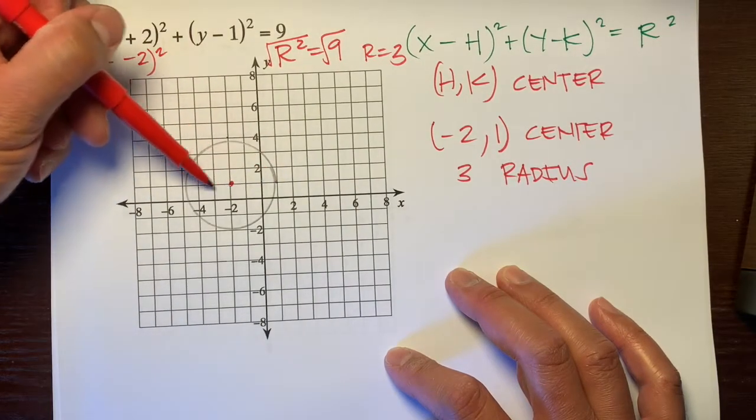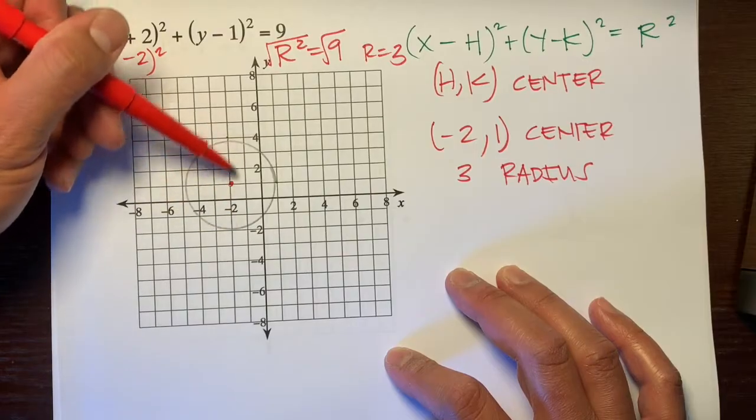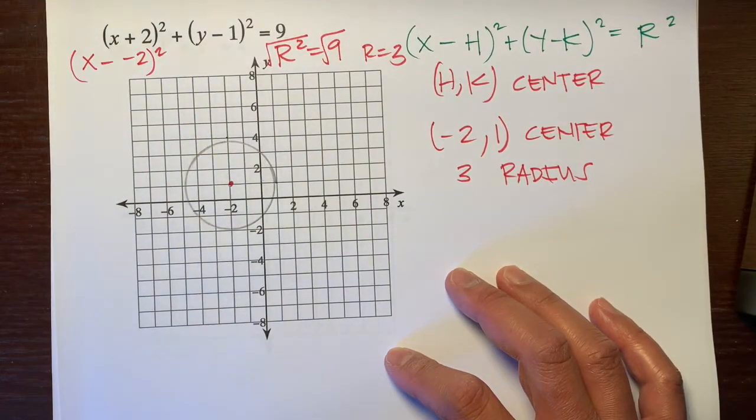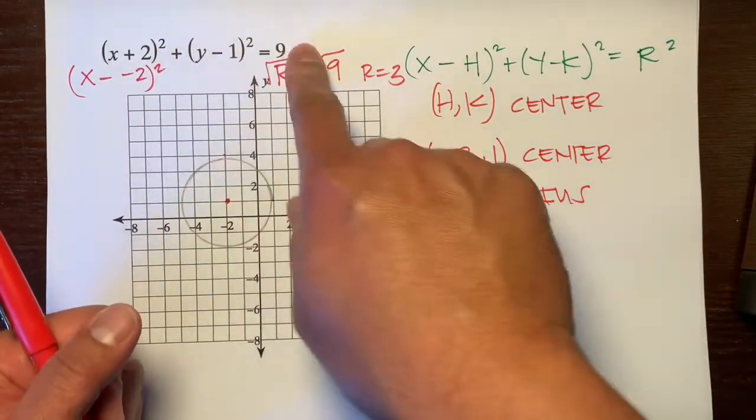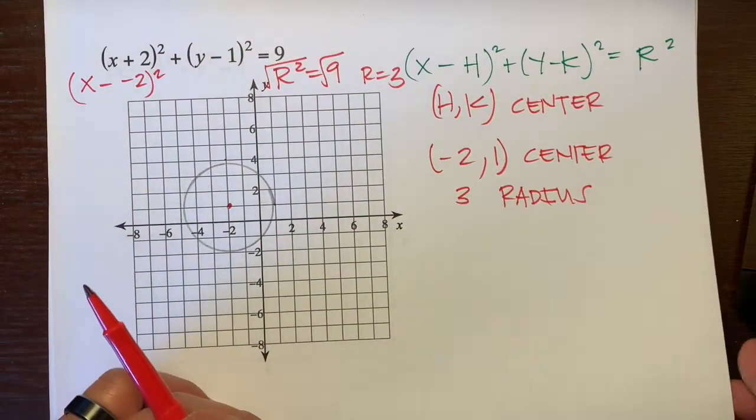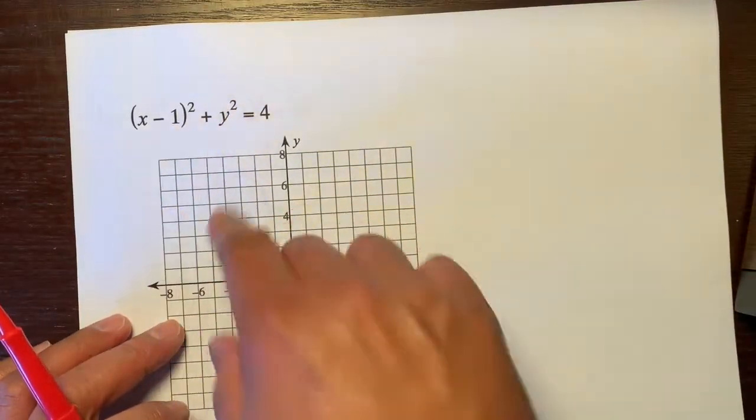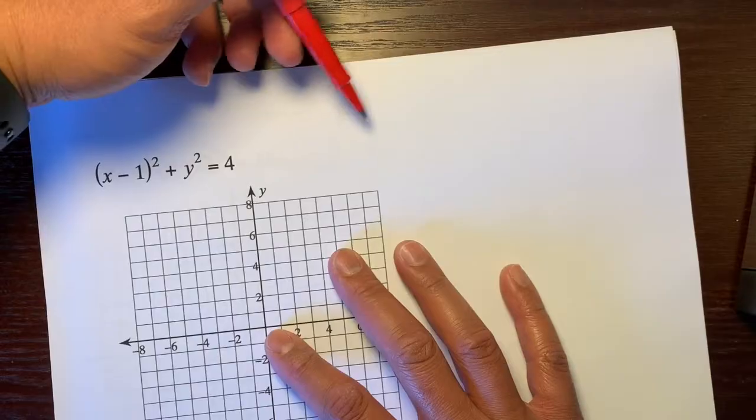This is 3 units away from the center. 3 units, 3 units, 3 units. And if we kept on going, all these radii would be 3 units away. That's how you graph this equation. Let me give you another example.